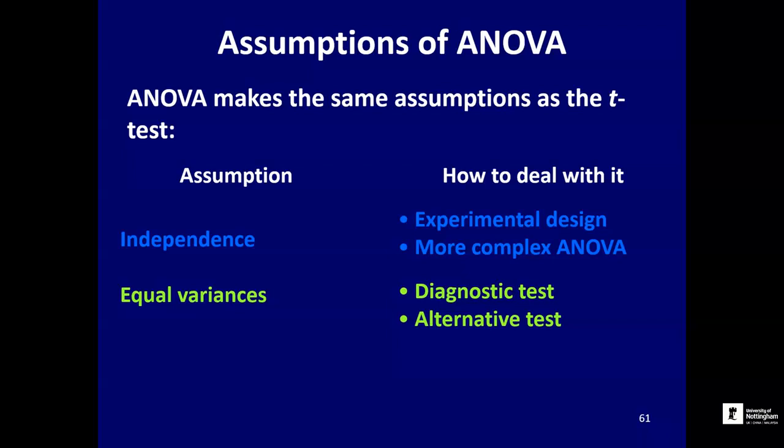Another key assumption of ANOVA is that the variances of the individual groups are the same — homogeneity of variance. That's a crucial assumption, just as it is in a t-test. We already know we have a diagnostic test for this: Levene's test. Just as you can use Levene's test prior to a t-test, you can use it prior to ANOVA to check the assumption of equal or homogeneous variances. If you fail that test — if there are significant differences among the groups in terms of variance — then alternative tests are available.